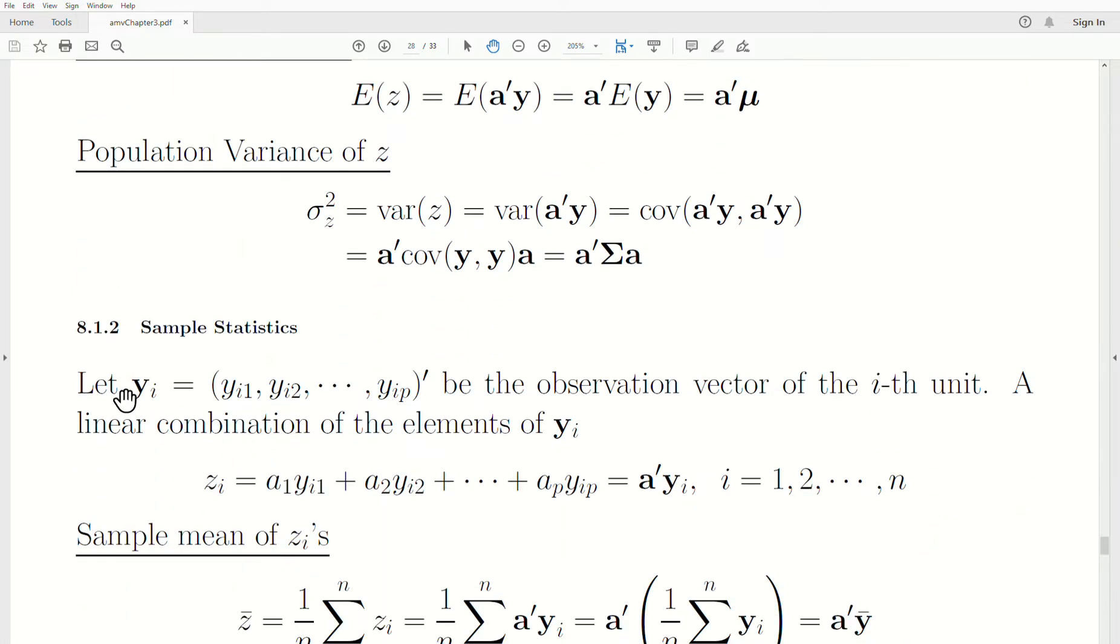Now, the sample statistics. Remember, we're dealing with a transformation, so one transformation. Let's let Yᵢ be the observation vector of the i-th unit and a linear combination of the elements of Yᵢ. So, each observation, each data point is transformed by A transpose Yᵢ. So, if we have a sample size of N, then we get N Zᵢ, N Z's in a sense.